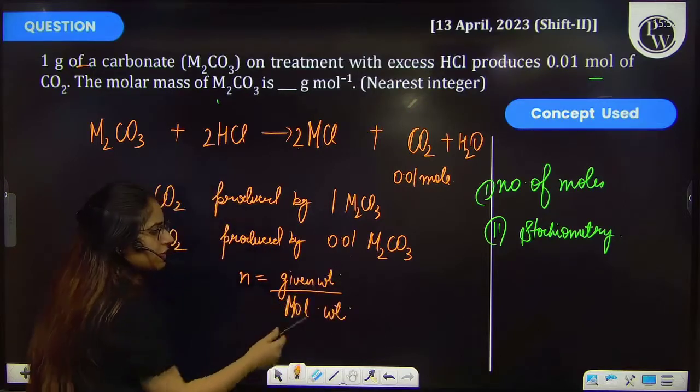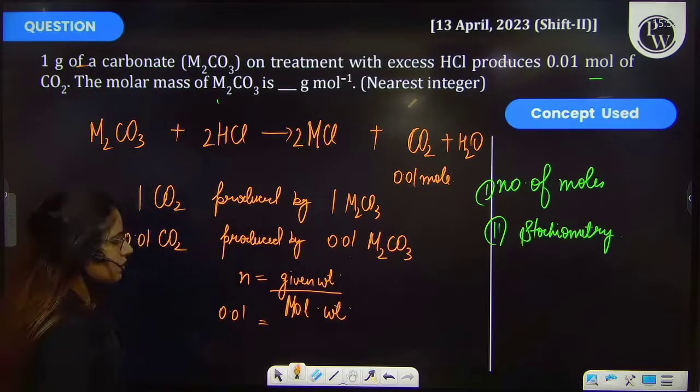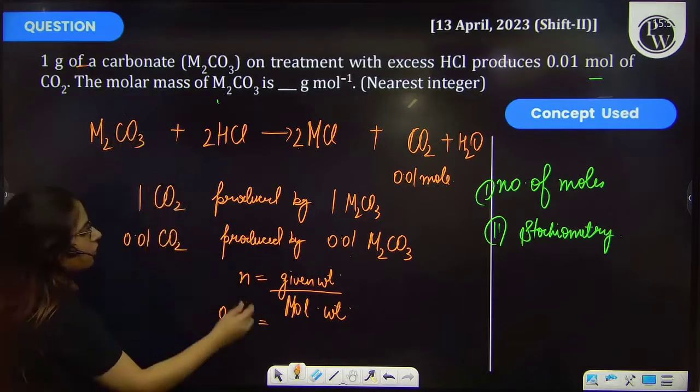Number of moles is 0.01 mol, and given weight is 1 gram of metal carbonate.